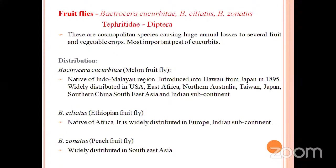Coming to the distribution: Bactrocera cucurbitae is the melon fruit fly, native to the Indo-Malayan region. It was introduced into Hawaii from Japan in 1895. It is widely distributed in USA, East Africa, Taiwan, Japan, Southern China, Southeast Asia, and the Indian subcontinent. Bactrocera celiatus is the Ethiopian fruit fly, native to Africa and widely distributed in Europe and the Indian subcontinent. Bactrocera zonatus is the peach fruit fly and is widely distributed in Southeast Asia.